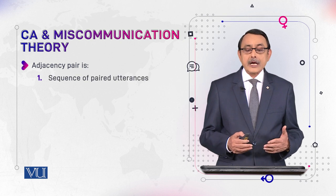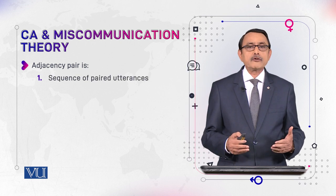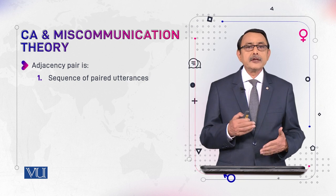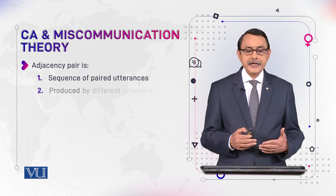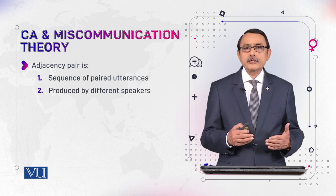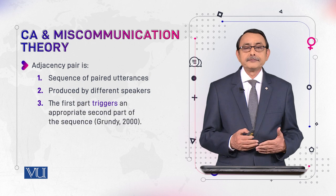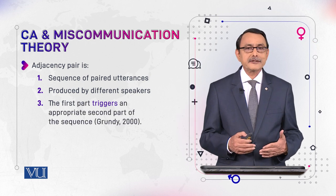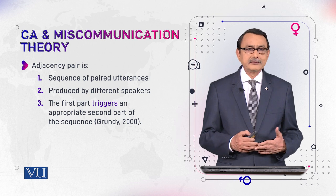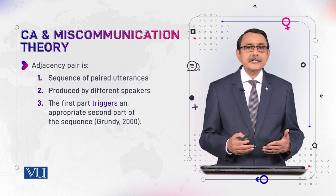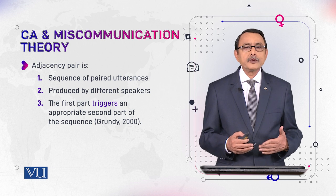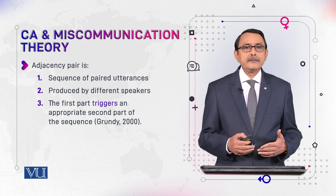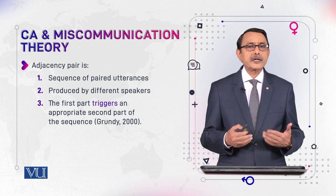We now formally define adjacency pairs. First, there is a sequence of paired utterances that come in order, one after the other. Second, they are produced by different speakers. Third, the first utterance sets an expectation for the second — from the first utterance we know what the second utterance is expected to be.